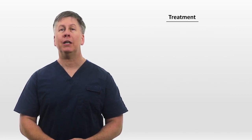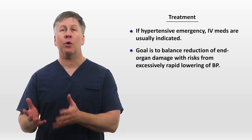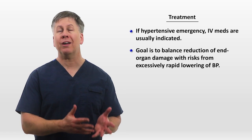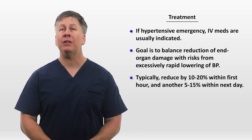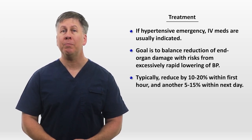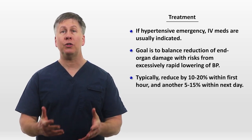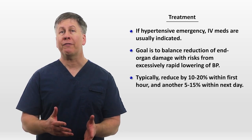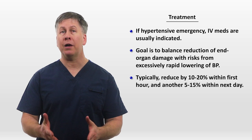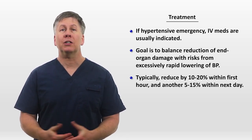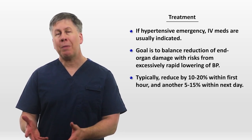Alternatively, if the patient is experiencing a true hypertensive emergency, intravenous medications are usually indicated. The goal with meds is to balance the reduction of end-organ damage with risks from excessively rapid lowering of the blood pressure, which are non-negligible and can include stroke. A typical approach is to aim for a reduction in the blood pressure by 10-20% within the first hour and another 5-15% within the next day. For example, in a patient presenting with hypertensive emergency and a blood pressure of 220 over 120, you might bring that down to 190 over 100 over the first hour and then down to 170 over 90 by the following day. Although you also need to frequently reassess the patient to see how they are responding. Once symptoms resolve, you could consider being less aggressive, whereas if symptoms are not responding after an hour or two despite successfully lowering the blood pressure at the intended rate, you may need to be more aggressive.